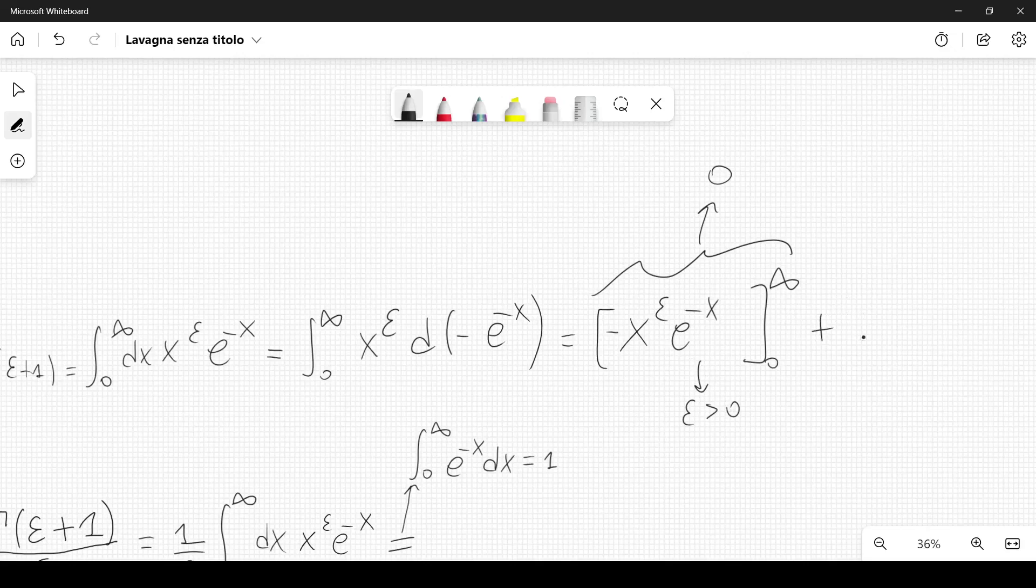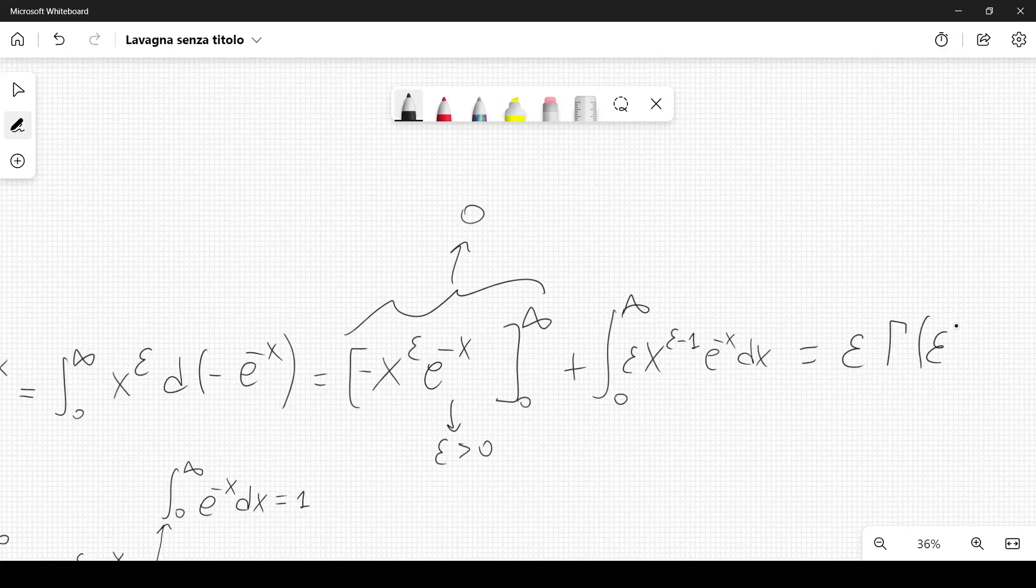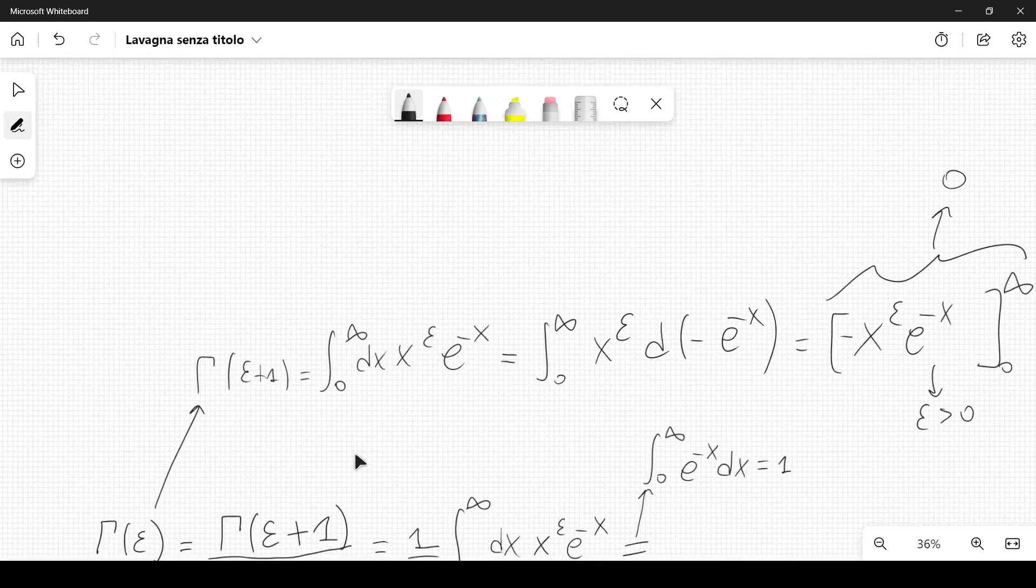Then we have plus integral from 0 to infinity, epsilon x to the epsilon minus 1, e to the minus x dx. Here you simply get epsilon times gamma of epsilon. So we derived the property we wanted.